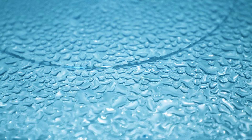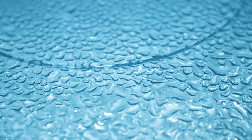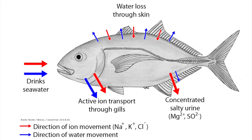Water always wants to reach an equilibrium, so it flows from high concentration areas over to low concentration areas in an attempt to reach it. Water concentration in saltwater fish is higher than in the ocean because the ocean is so salty. Everywhere there is salt, there cannot be water. As a result, most saltwater fish constantly lose water through their gills and through their skin.